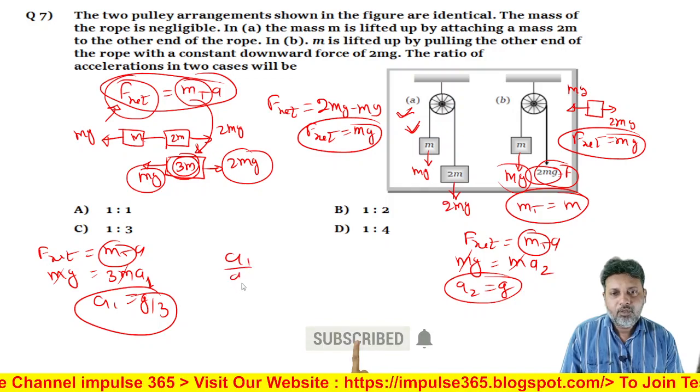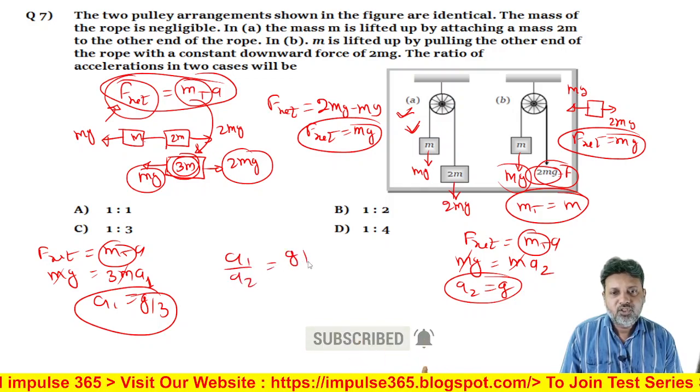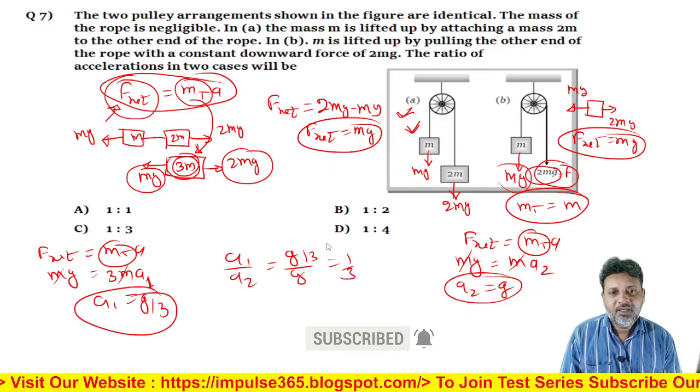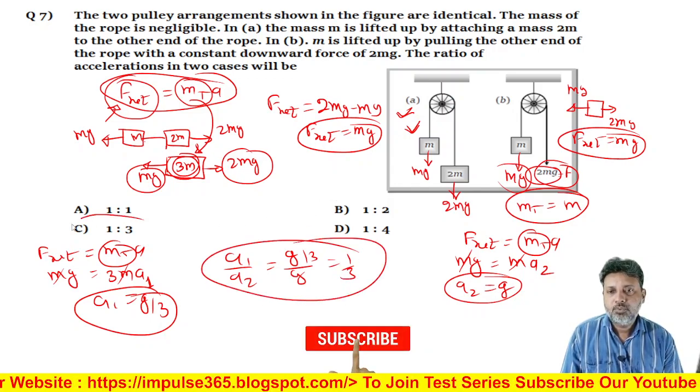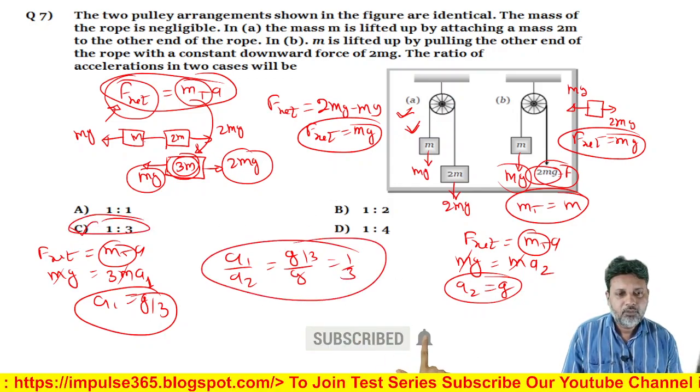To A1 upon A2 ki value kya aa gayi, G by 3 upon G, yani 1 by 3 aa gayi. 1 by 3 kaun sa option hai, C wala option jyada appropriate hai. Chalo next question karte hain.